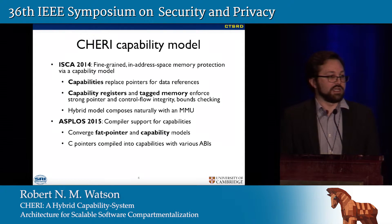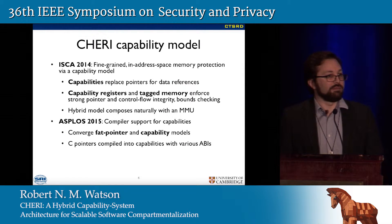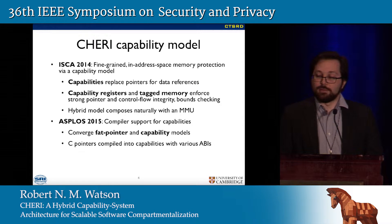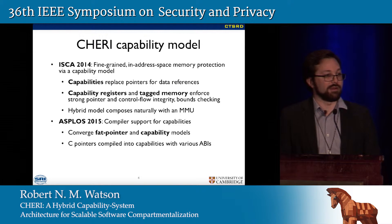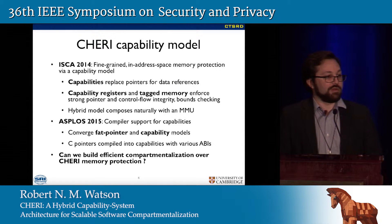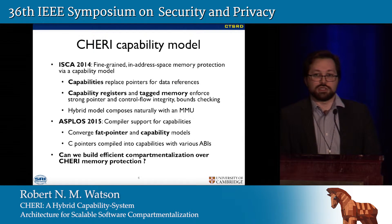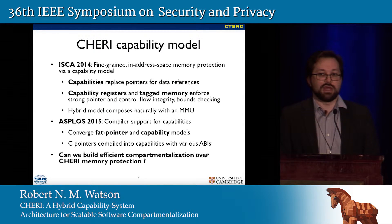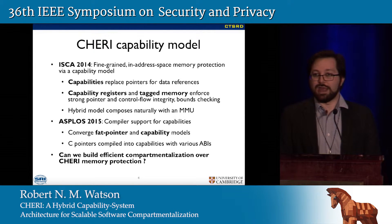To do that, we had to merge ideas from fat pointers — which account for the fact that in C, a pointer may range throughout or even beyond the bounds of its buffer — with capabilities to get strong integrity properties. We were able to use a compiler to generate these. And of course we're now able to run with them on top of CHERI, which begs the question: if existing fine-grained compartmentalization is based on memory protection using the MMU, can we construct similar structures using the capability model within address spaces — which might be a better way to accomplish fine-grained compartmentalization within an application.